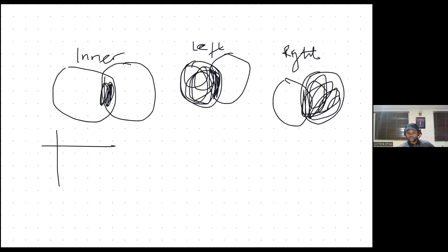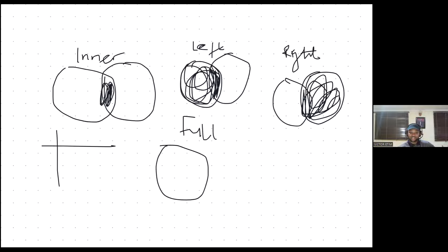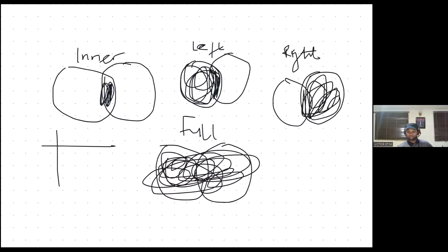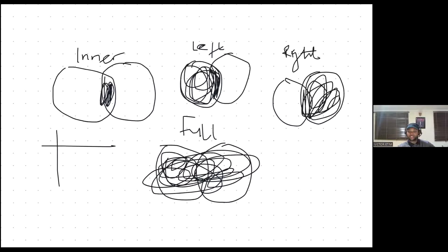You're taking what is on the left, joining it toward the right based on what is similar between the two of them. Then you have what we call a full join. Basically, for a full join, you're merging all the tables together — no special features. And that's what we're going to be looking at using Tableau.